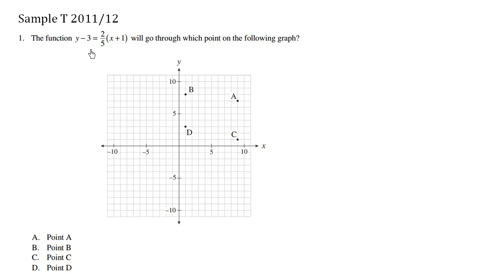The function y minus 3 equals 2 fifths x plus 1 will go through which point on the following graph? We have four points here: a, b, c, d.